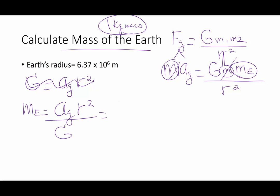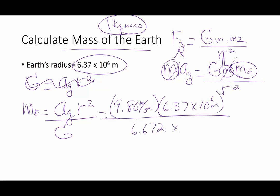Well, the acceleration of gravity, 9.80 meters per second squared. Radius of the Earth, 6.37 times 10 to the 6th meters, 6.672 times 10 to the negative 11th newton meters squared kilogram squared. And when you throw that in your calculator, I got out 5.96 times 10 to the 24th kilogram.